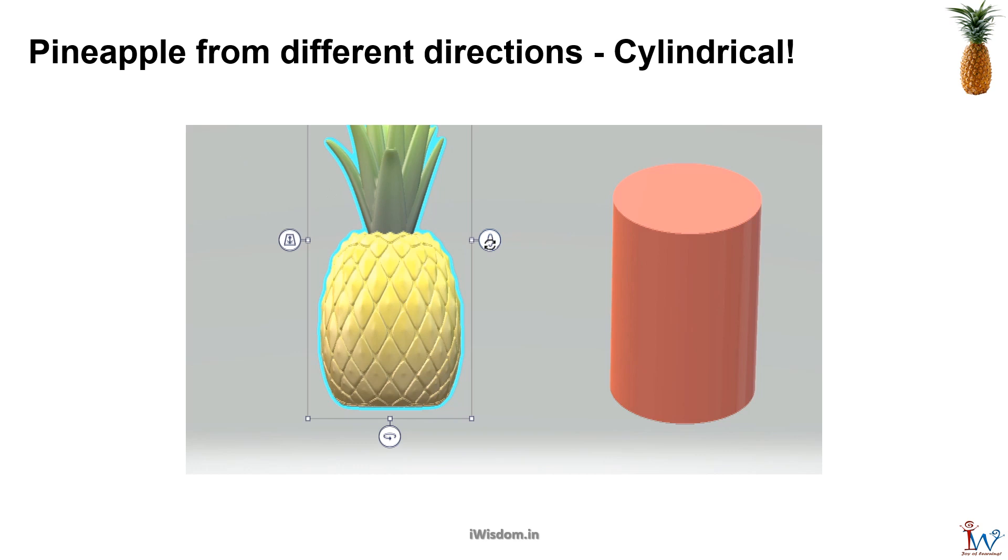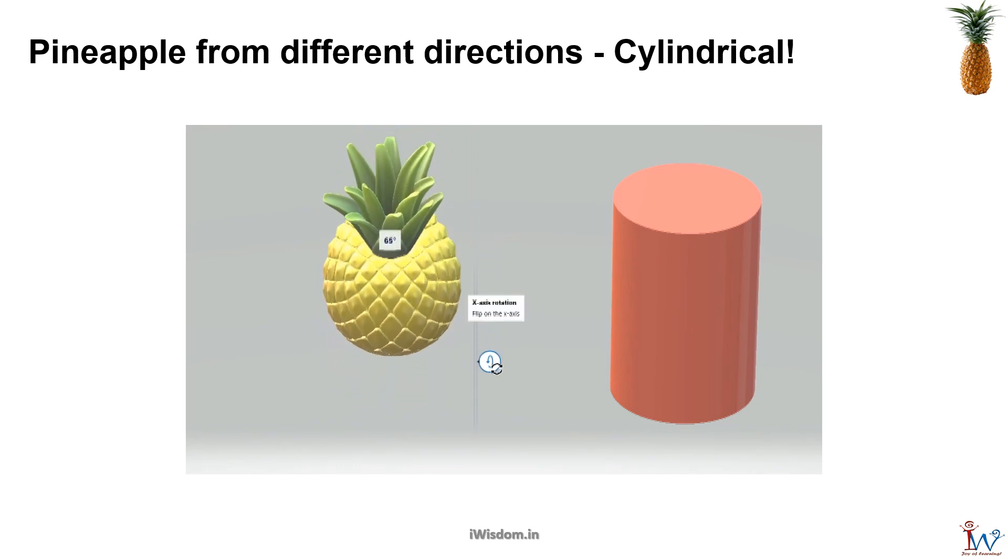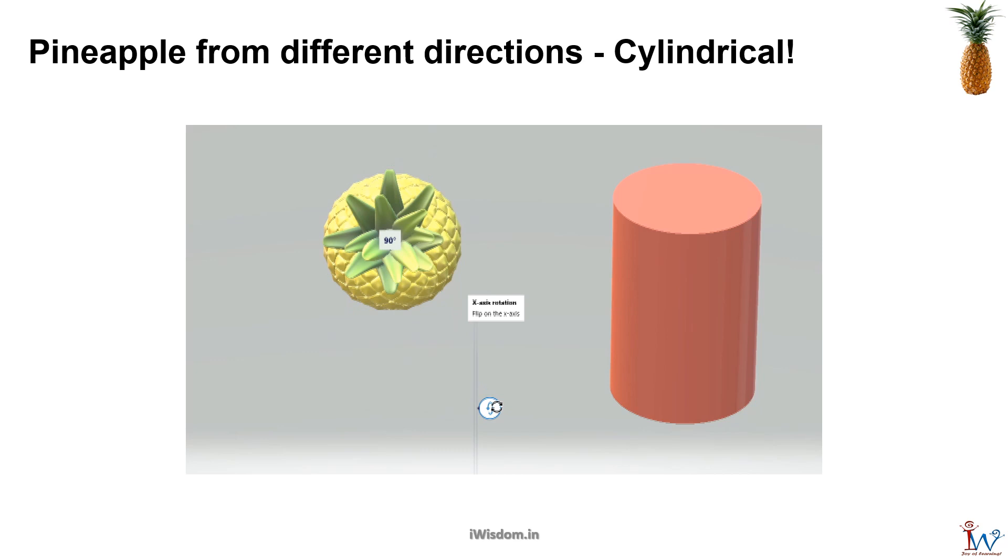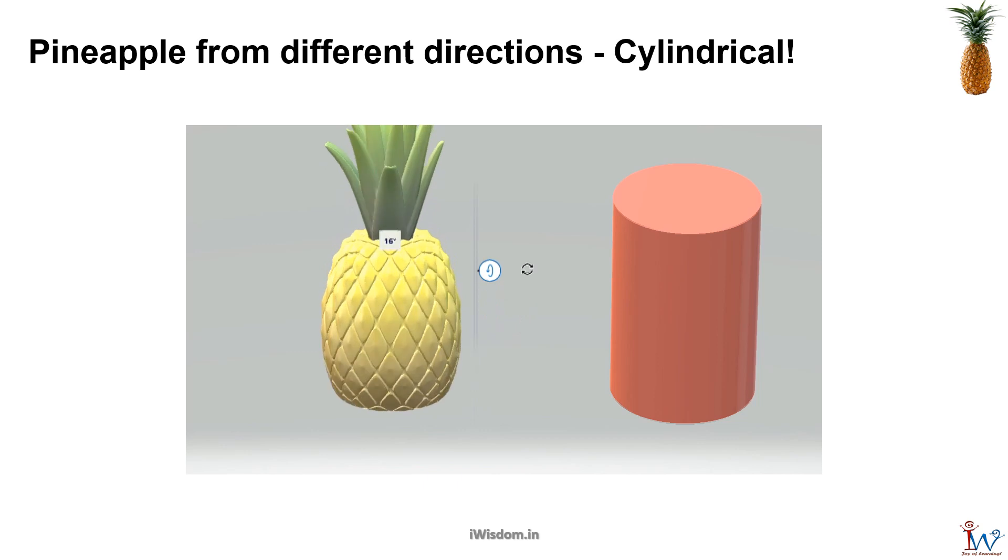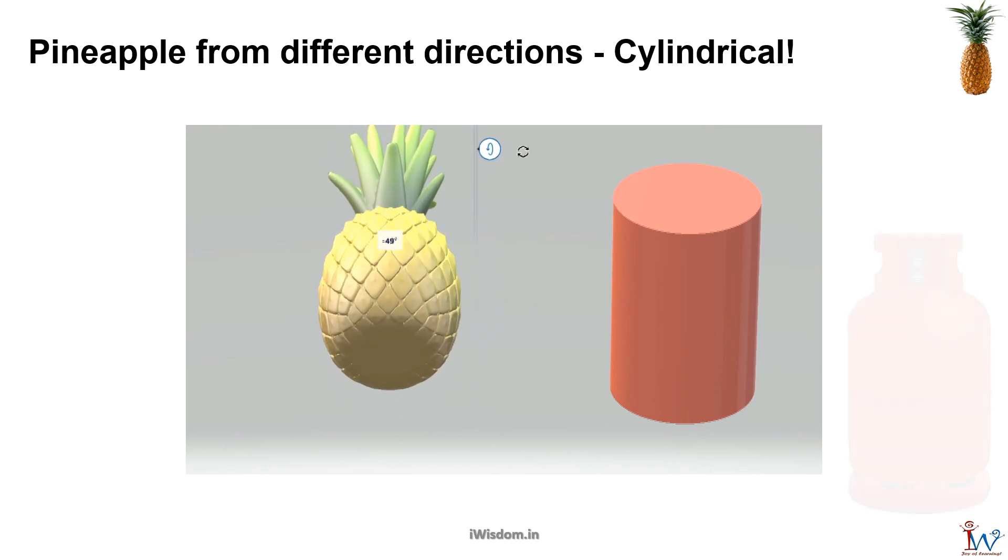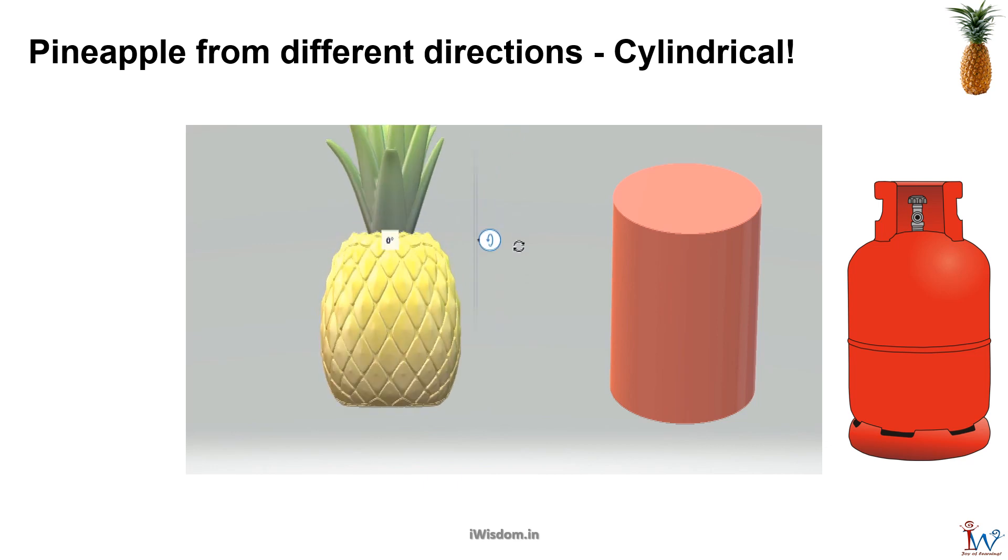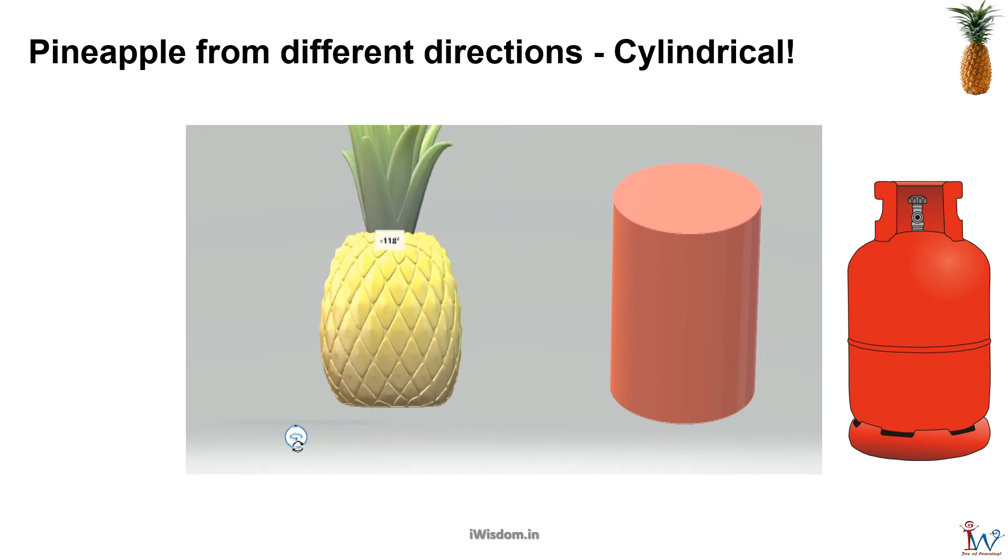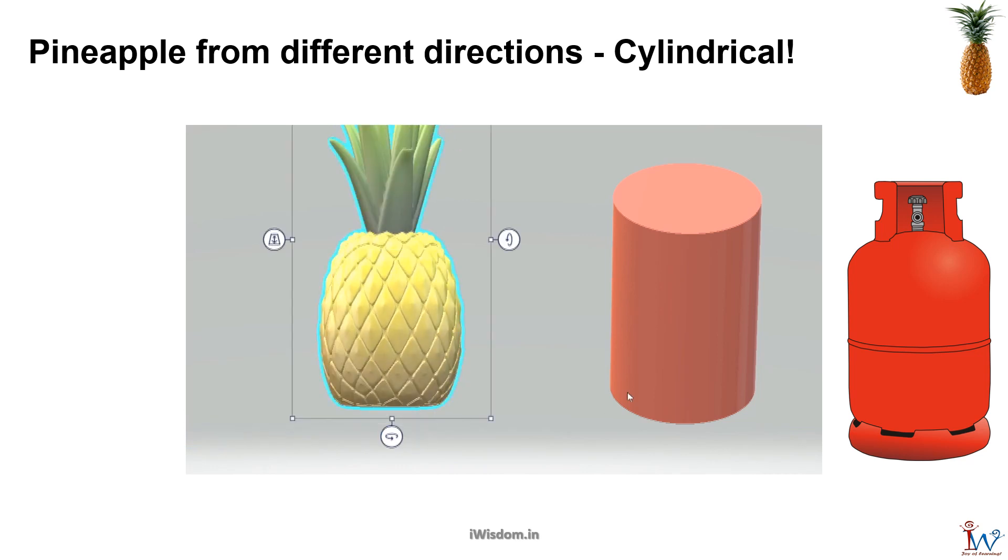As you can see, when you look at the pineapple from the top it is circular. But from the side, it is almost rectangular. Such objects are called cylindrical, as they resemble the shape of a gas cylinder. Perfect cylindrical shaped object is given on the side as a reference.